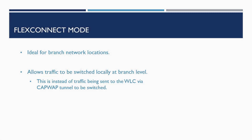Flex Connect Mode is a mode designed for scenarios where we have APs at branch offices that connect to a central wireless LAN controller. It allows traffic to be switched locally at the branch, rather than sending all traffic over the WAN back to the central wireless LAN controller. This allows a branch network with APs in Flex Connect Mode to continue to operate and serve clients if the WAN link to the wireless controller is down.